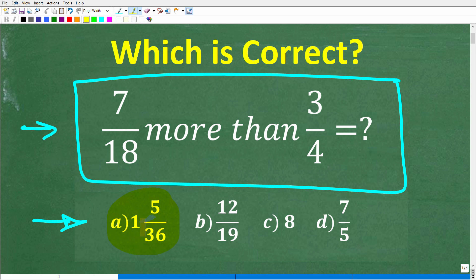So the first choice, A, is a mixed number fraction. That's 1 and 5/36. B is 12/19. C is 8. And D is 7/5. So one more time, no calculator. But if you can figure this out, go ahead and put your answer into the comment section. I'll show you the correct answer in just one second. And then, of course, I'll walk through exactly how to solve this problem step by step.